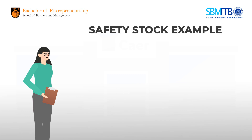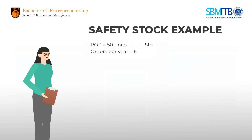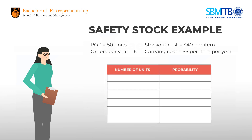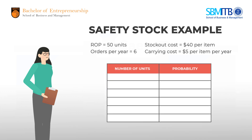Linda already has a reorder point (ROP) for her fashion retailer — it's 50 units — with number of orders at 6 per year, stockout cost $40 per item, and carrying cost $5 per item per year. Linda's store has experienced the following probability distribution for inventory demand.